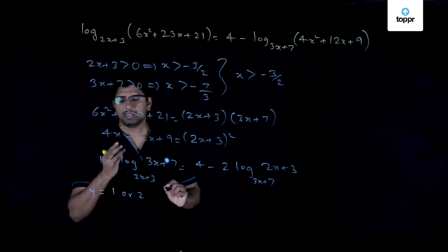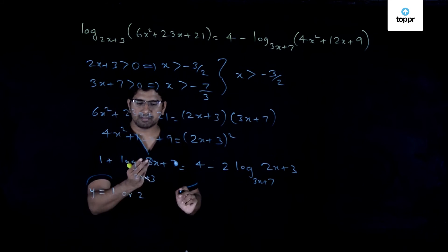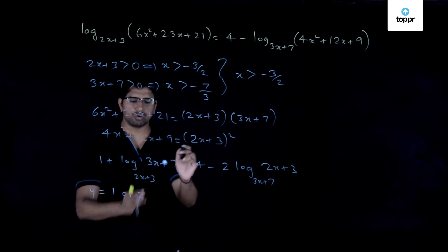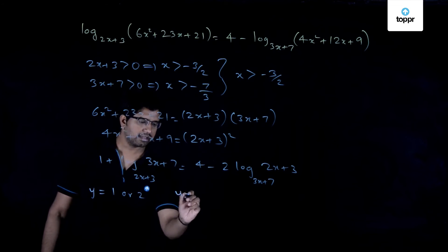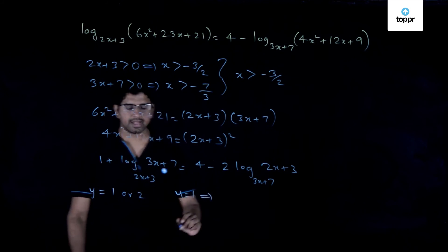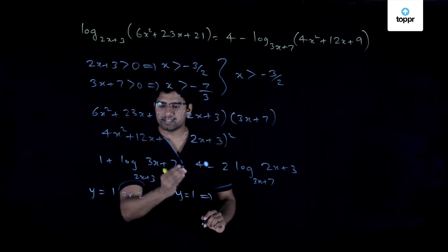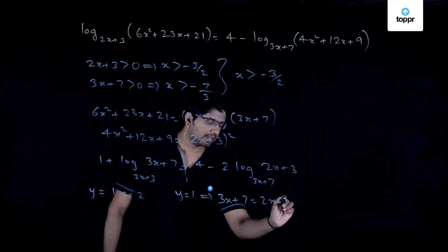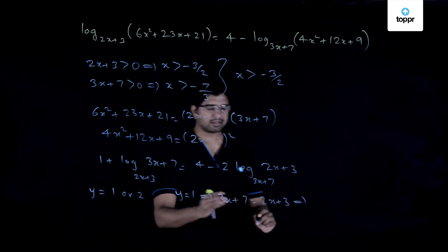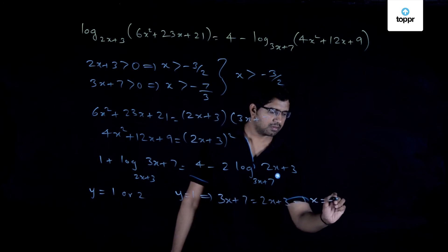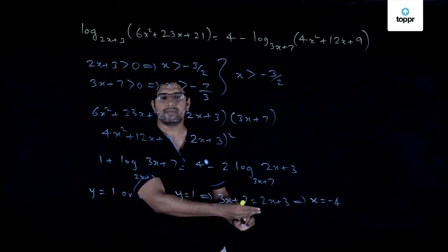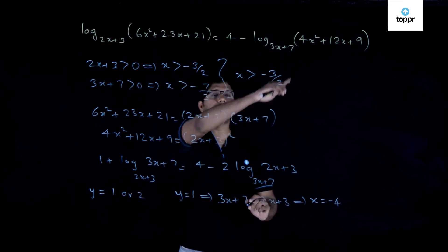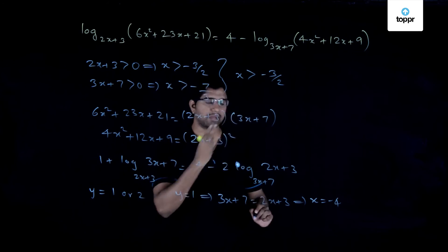So what does that mean? If y is equal to 1, it means that this expression is equal to 1. So y=1 actually implies that 3x+7 is equal to 2x+3, which implies that x is equal to -4. Is this an admissible value? Definitely not, because we already have this condition that x should be greater than -3/2. So therefore you can discard this value.